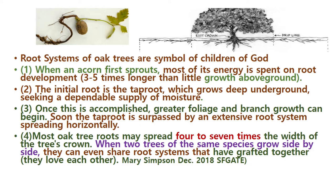Number one: when an acorn first sprouts, most of its energy is spent on root development — three to five times longer than the little growth above ground. See another picture. This is the Oak Tree. You see the size of the tree and branches.